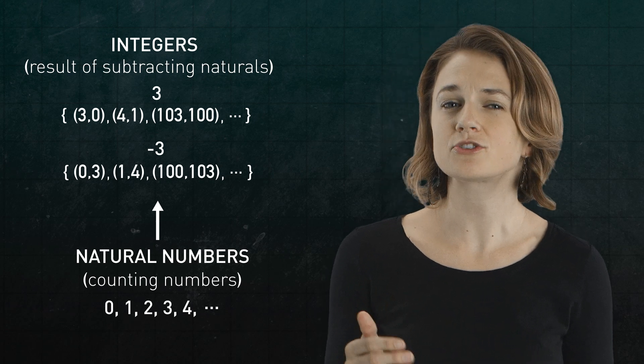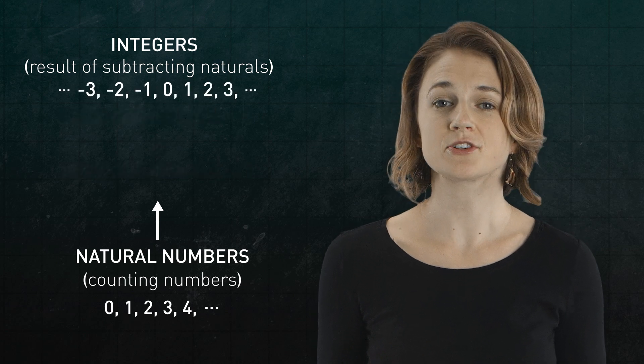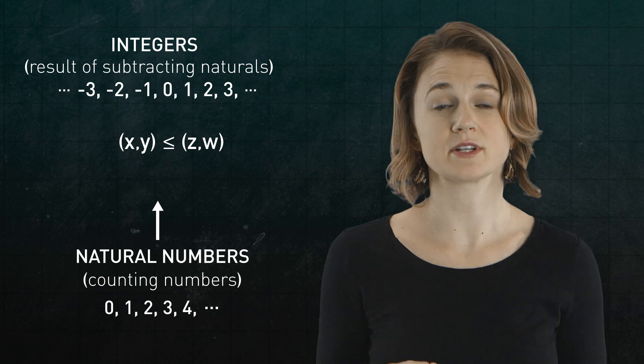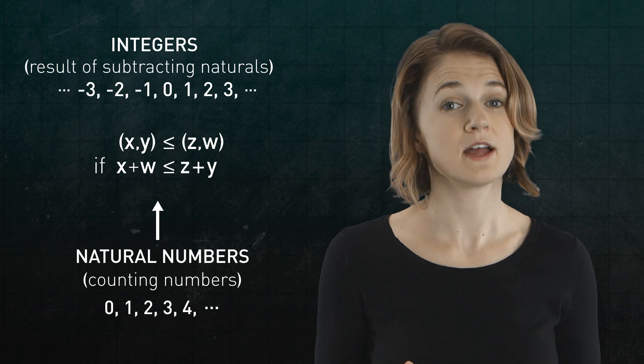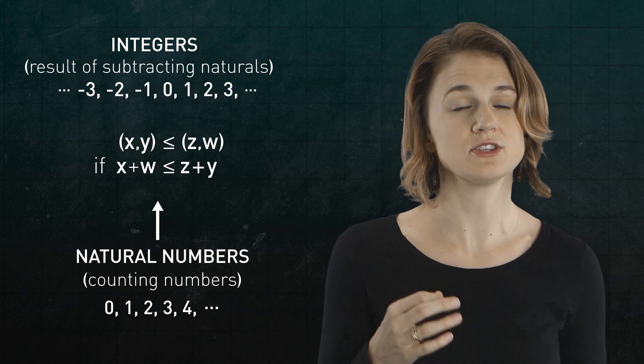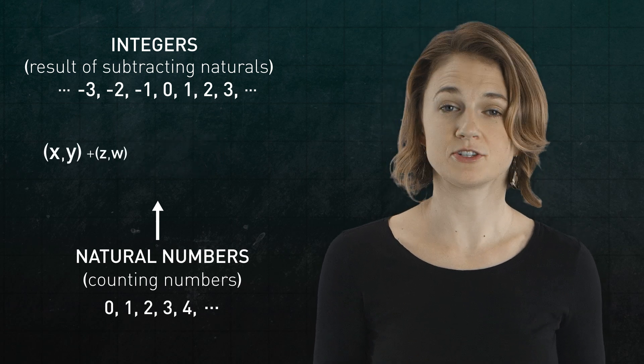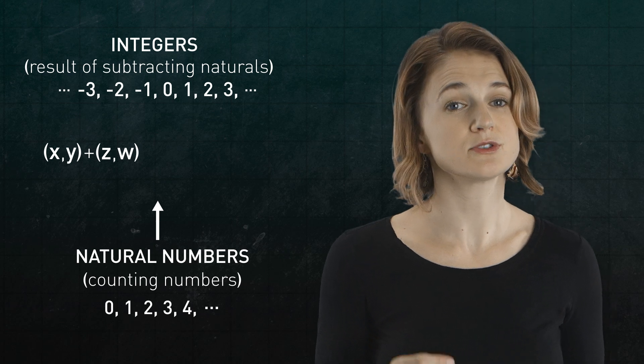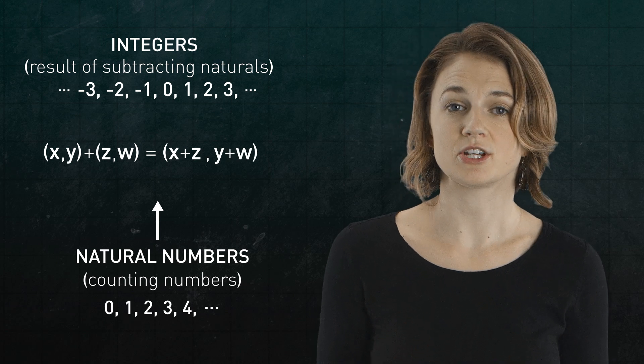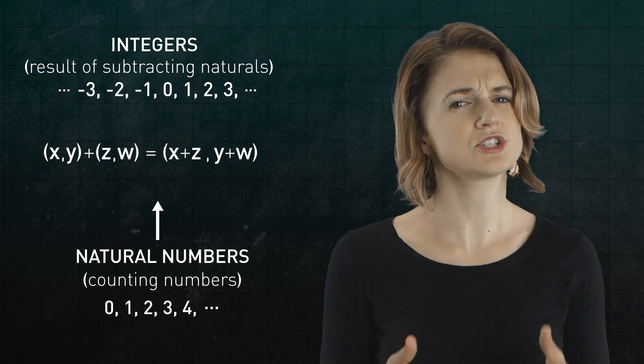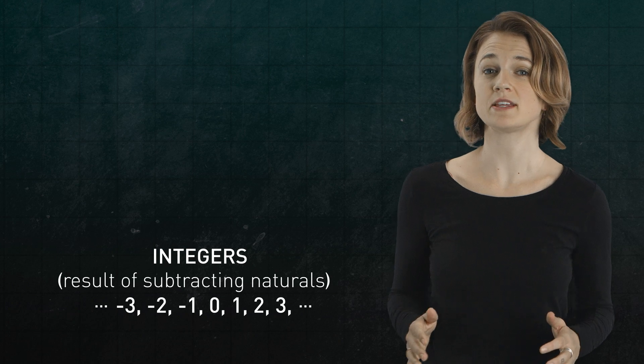Under this definition, the integers also inherit their structure and properties from the natural numbers. For example, the integer associated with (x, y) is less than or equal to the integer associated with (z, w) if x plus w is less than or equal to z plus y. The order on the integers is defined using the order on the natural numbers. And the integer associated with (x, y) plus the integer associated with (z, w) is equal to the integer associated with (x + z, y + w). Integer addition is defined using natural number addition. You should check that the structure aligns with your intuition about the integers. We've constructed the integers using the natural numbers.